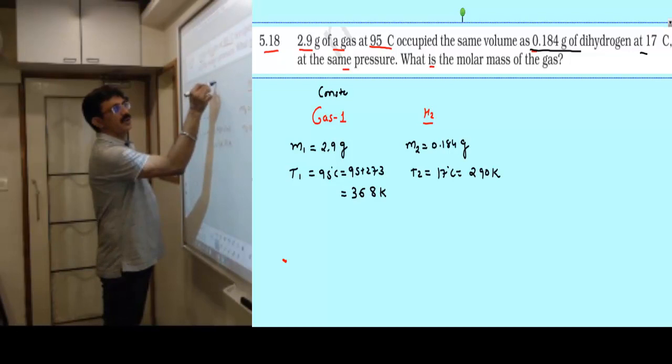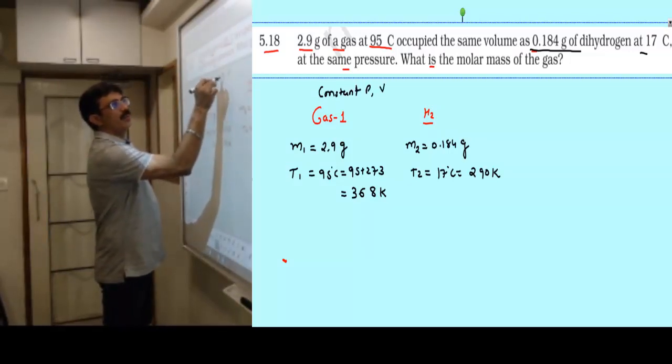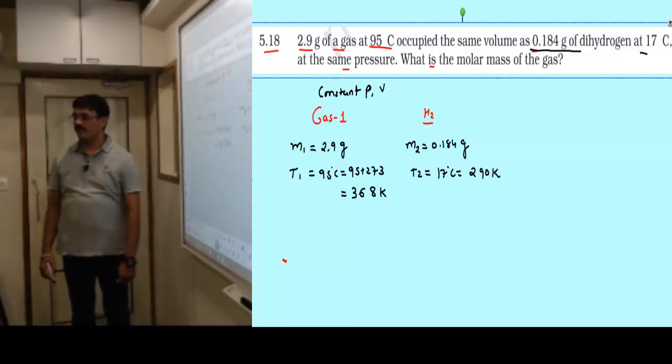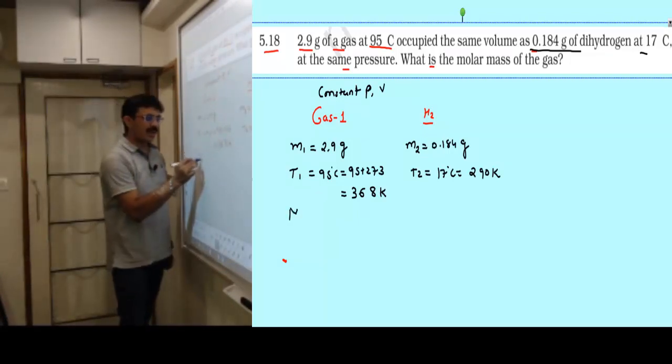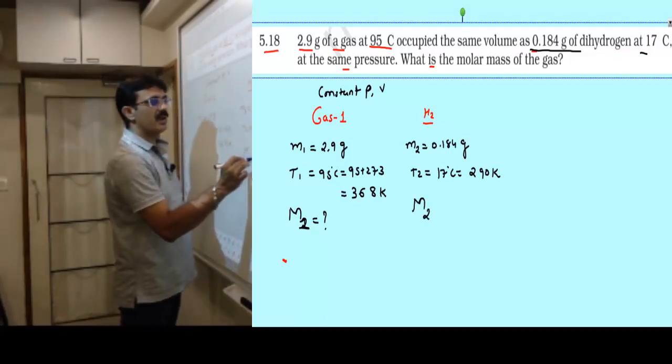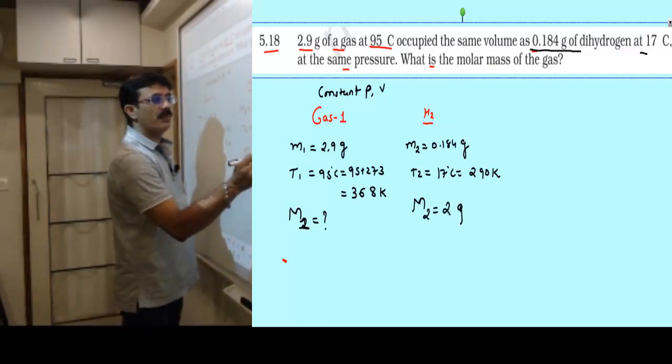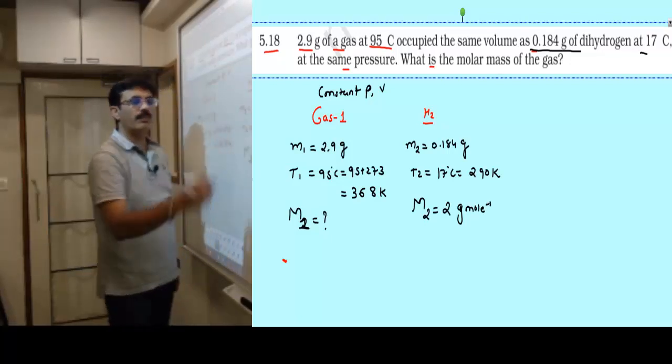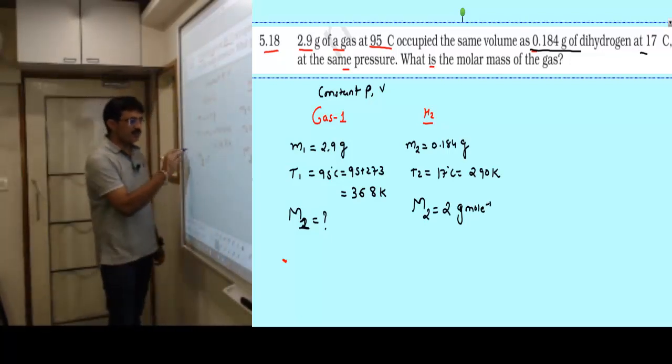Both have same pressure and volume - constant pressure and volume are not changing. What is the molecular mass of gas one, m1? Obviously hydrogen gas molecular mass I know: 2 gram per mole.